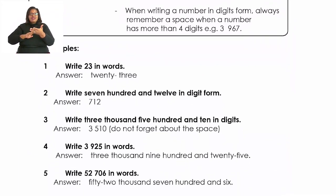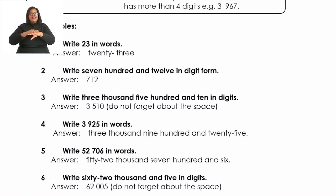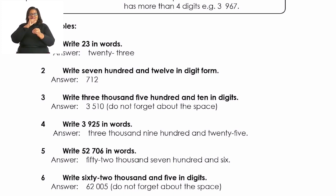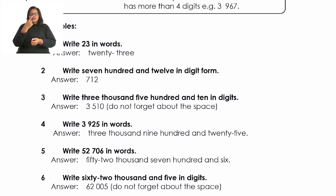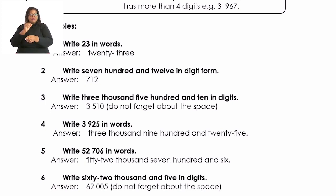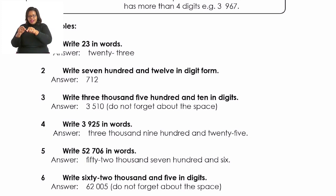Let's look at our first example. Write 23 in words. It's always easy to write a number in words — say the number out loud and as you hear the digits, write them down. Twenty-three: we hear twenty, so we write twenty, then we hear three, so we write three. Twenty-three. And going back to our rule, make sure we spell 23 correctly.